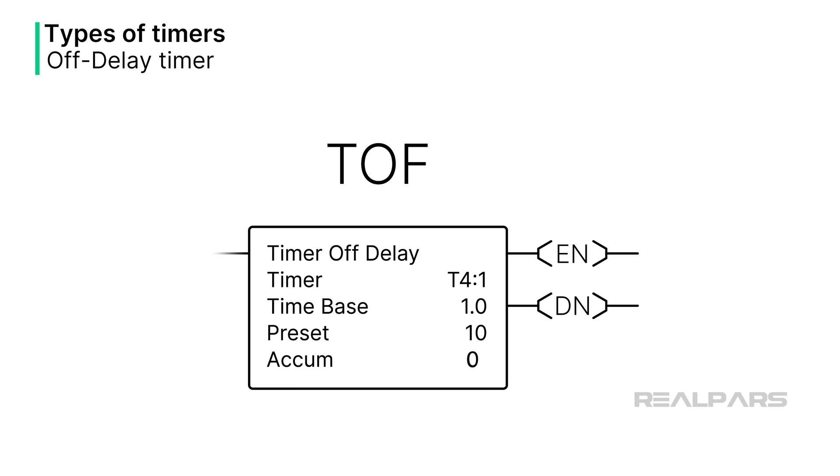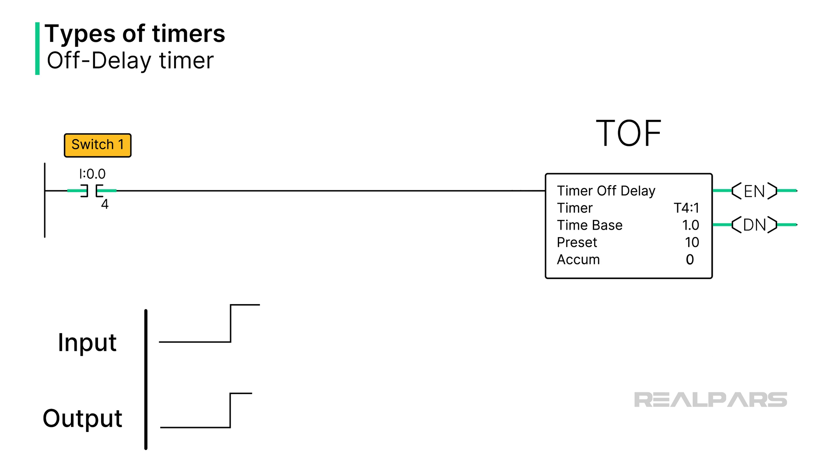An off-delay timer acts somewhat in the reverse of an on-delay timer. Once the timer rung goes true, the done bit is set immediately. When the timer input goes false, the timer begins to time, and after the preset is reached, the done bit turns off. This type of timer is useful for delaying an action until a certain time period has elapsed.